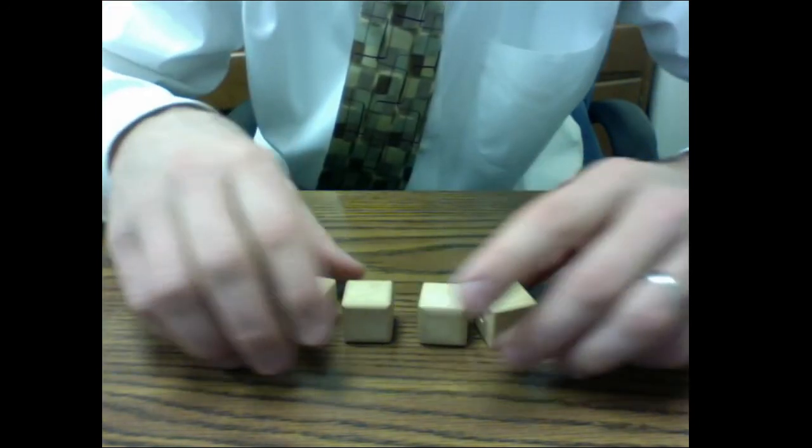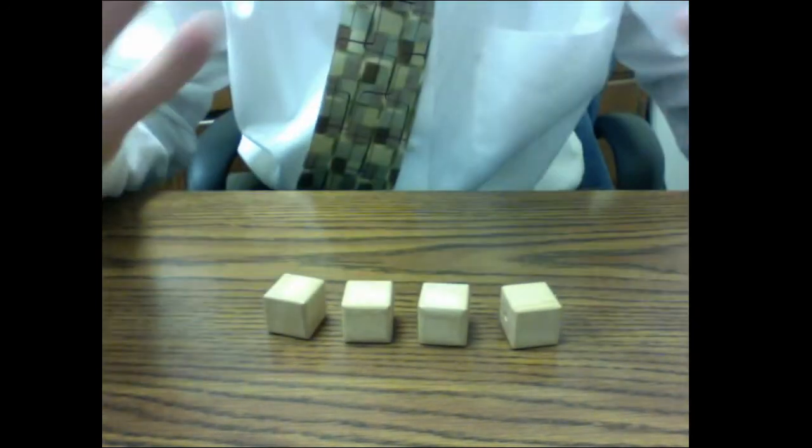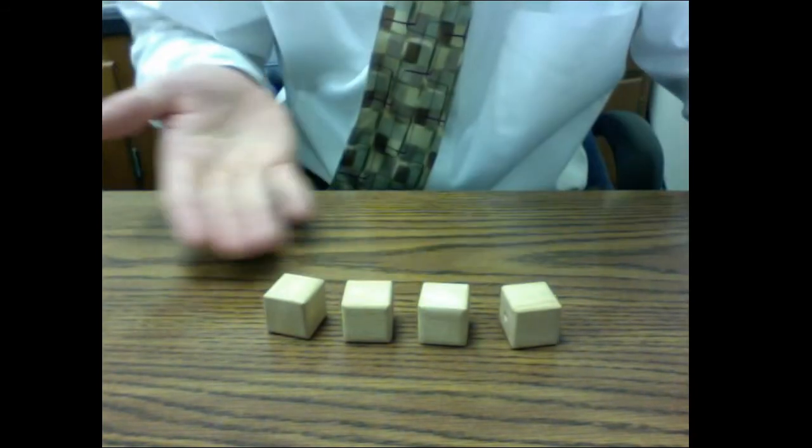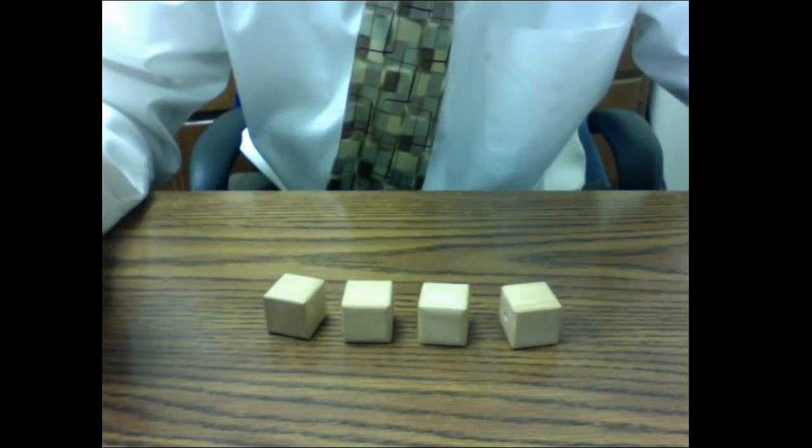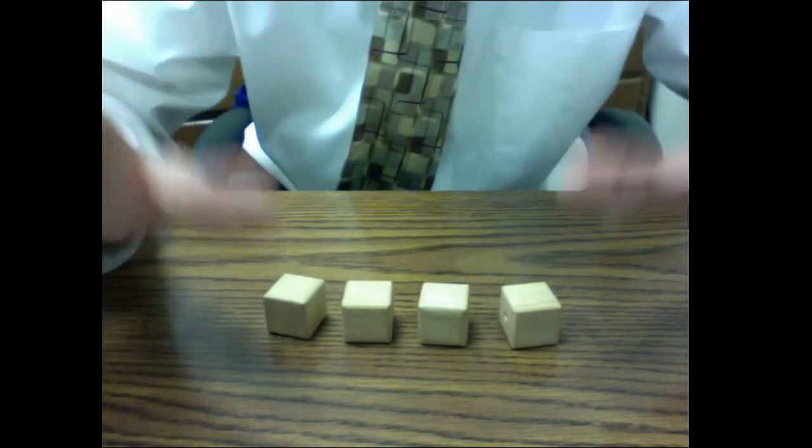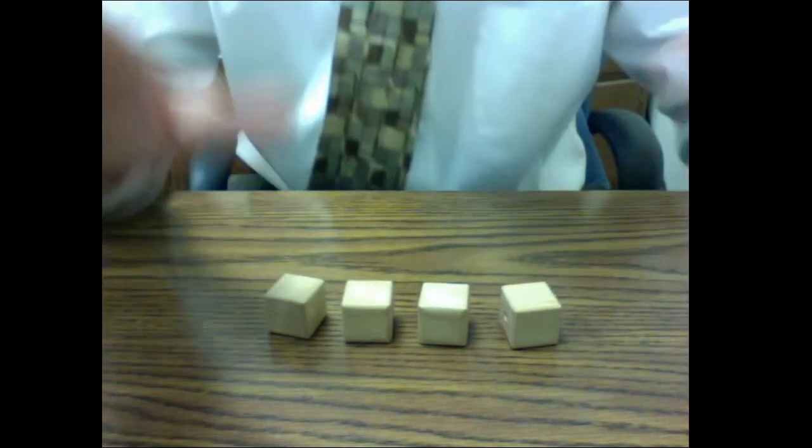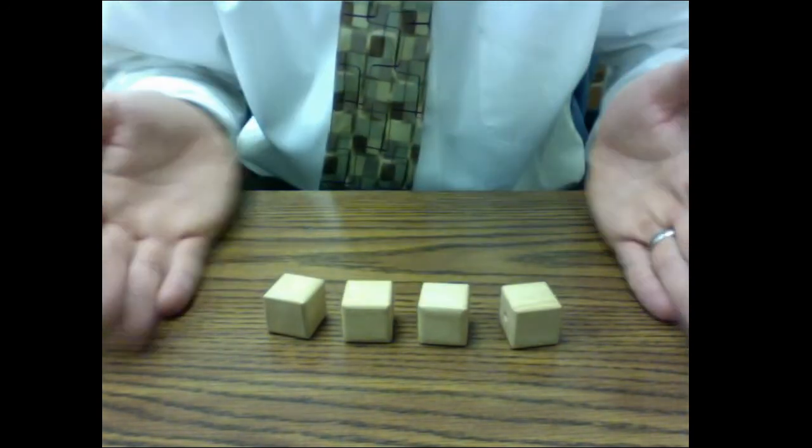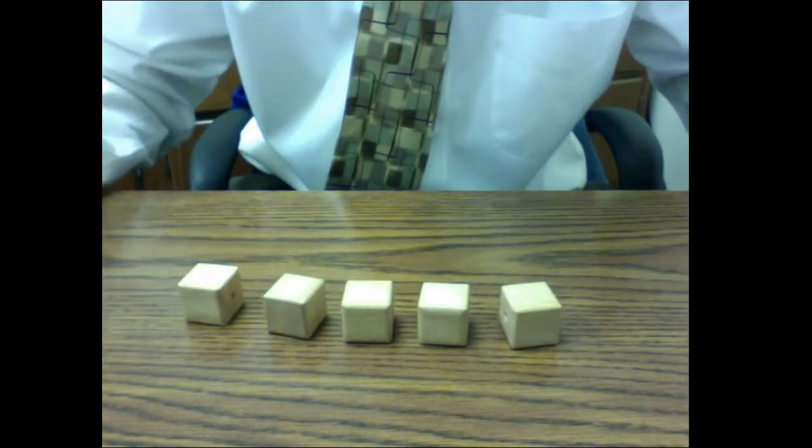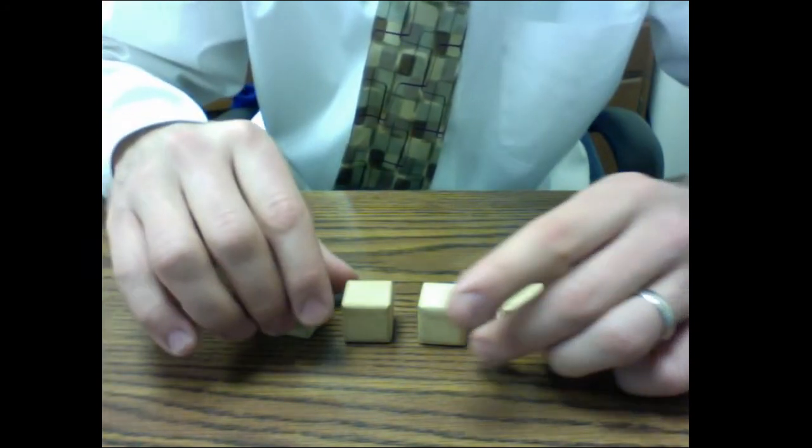When we're talking about percent of change, in this first example, let's say we have four blocks. What I start out with is my original amount. If I have these four blocks here, that's my original amount. Whether I add or subtract from that gives me my percent of change. Let's say I have these four here and I decide to add one more.